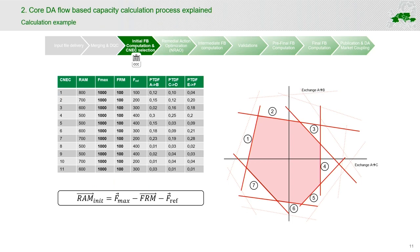The RAM value is obtained by subtracting from the thermal capacity F_max the flow reliability margin (FRM) and some reference flows, here signed as F_reference. As an example, we can see a list of critical network elements, each having a RAM calculated as F_max minus FRM minus F_reference, and a list of PTDFs for these elements. On the right side of the slide, we can see a graphical representation of how such a flow-based domain would look like.